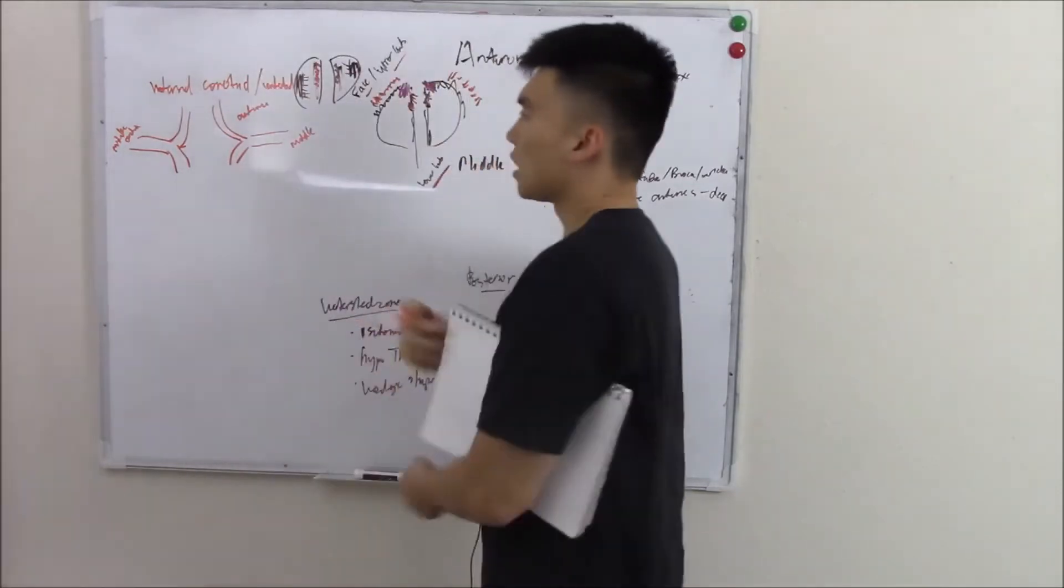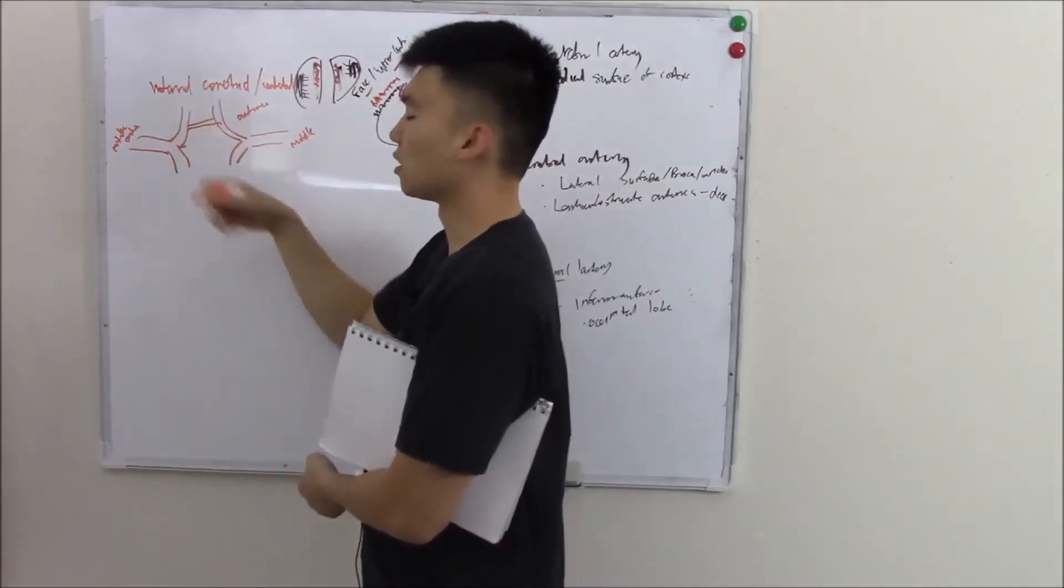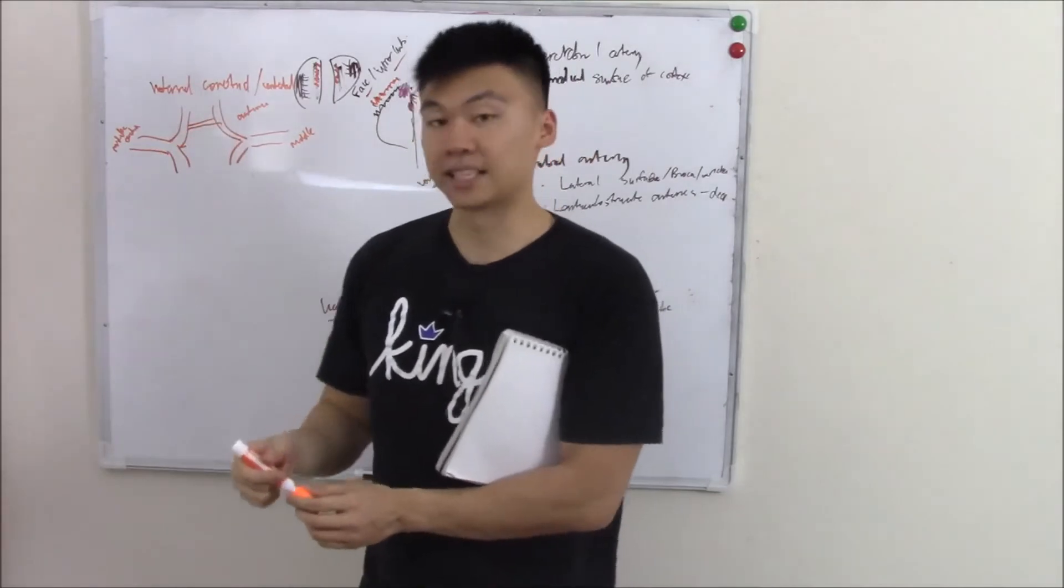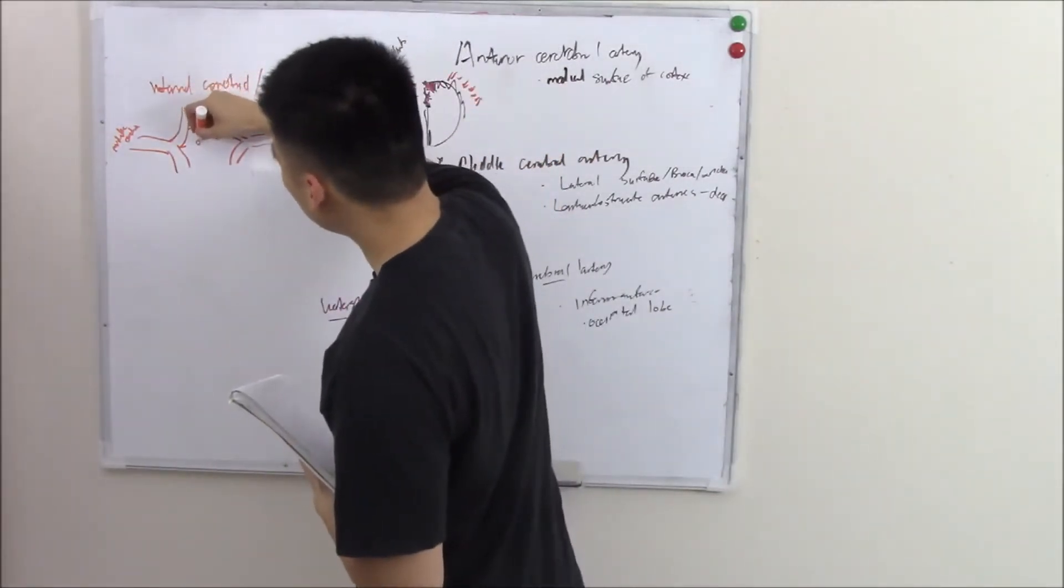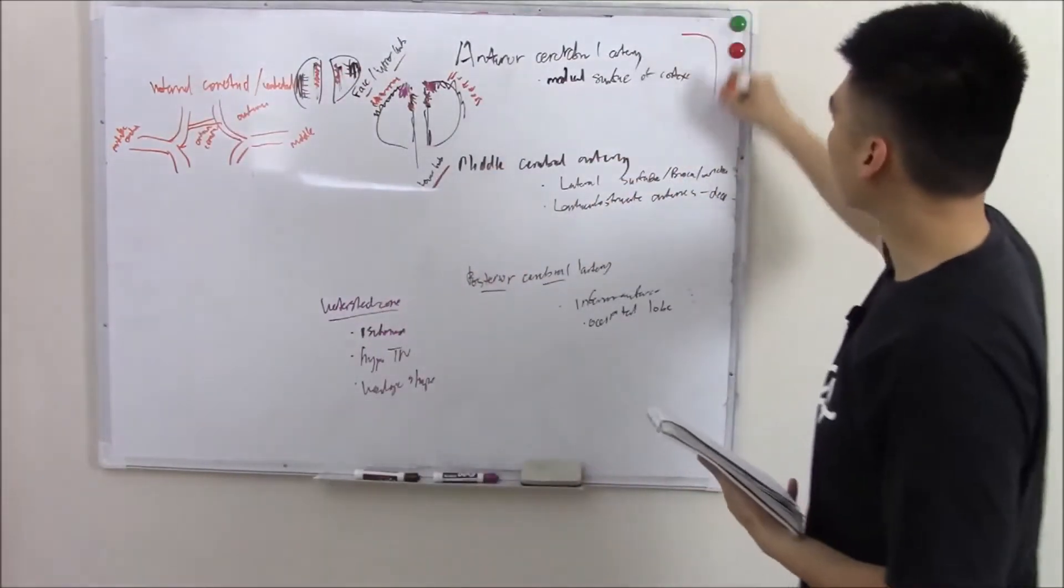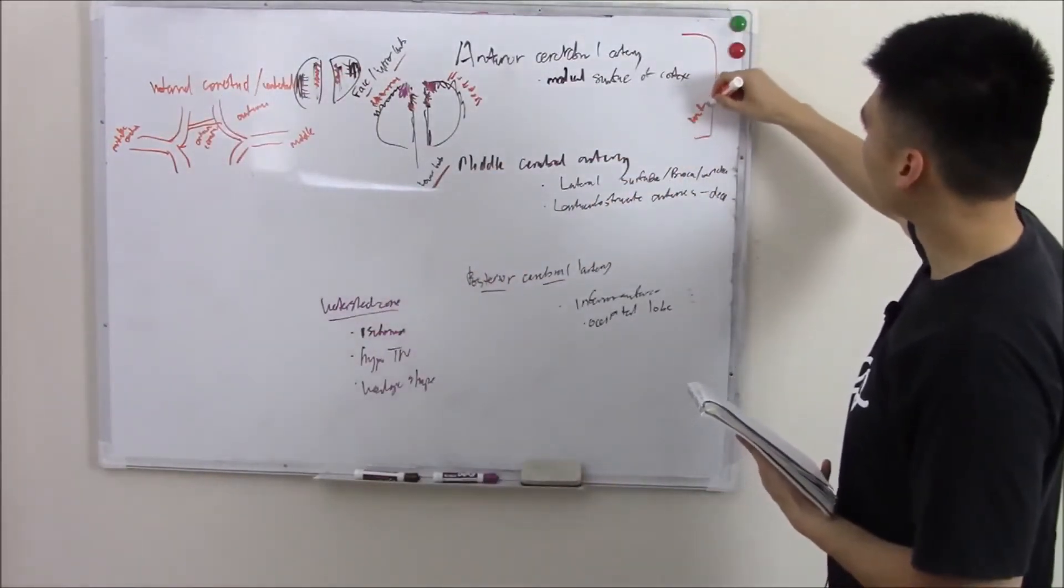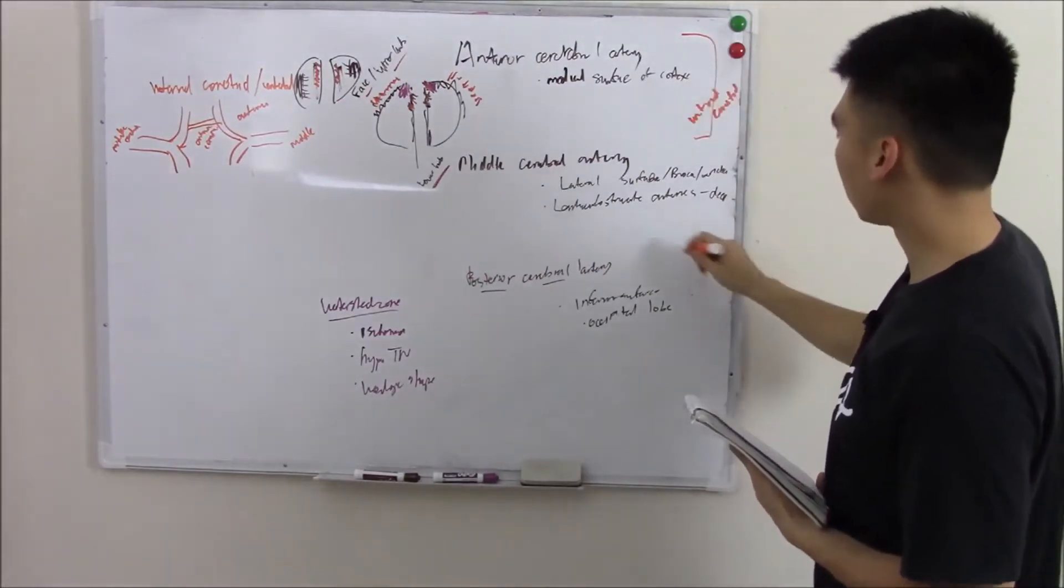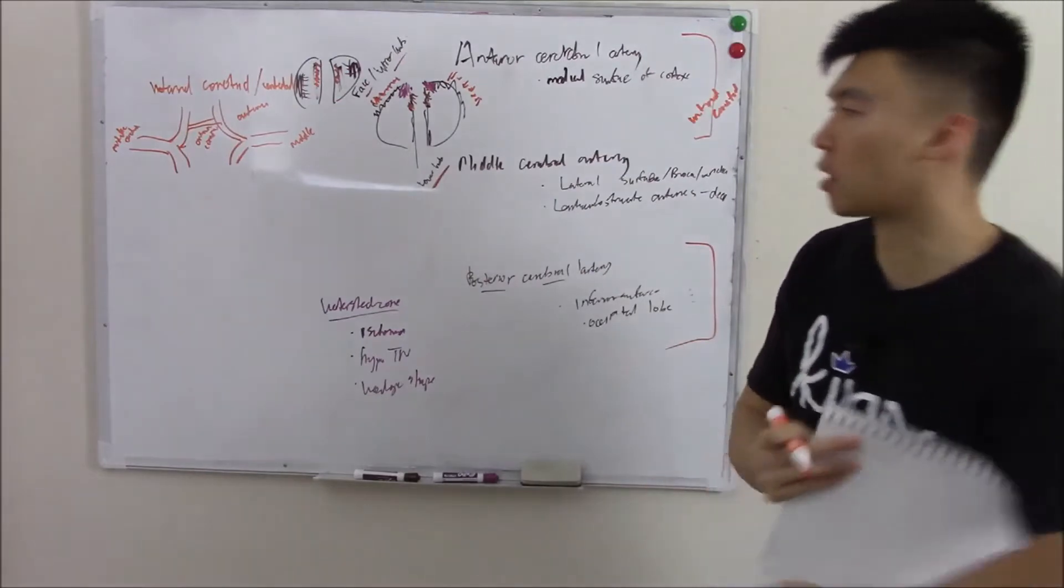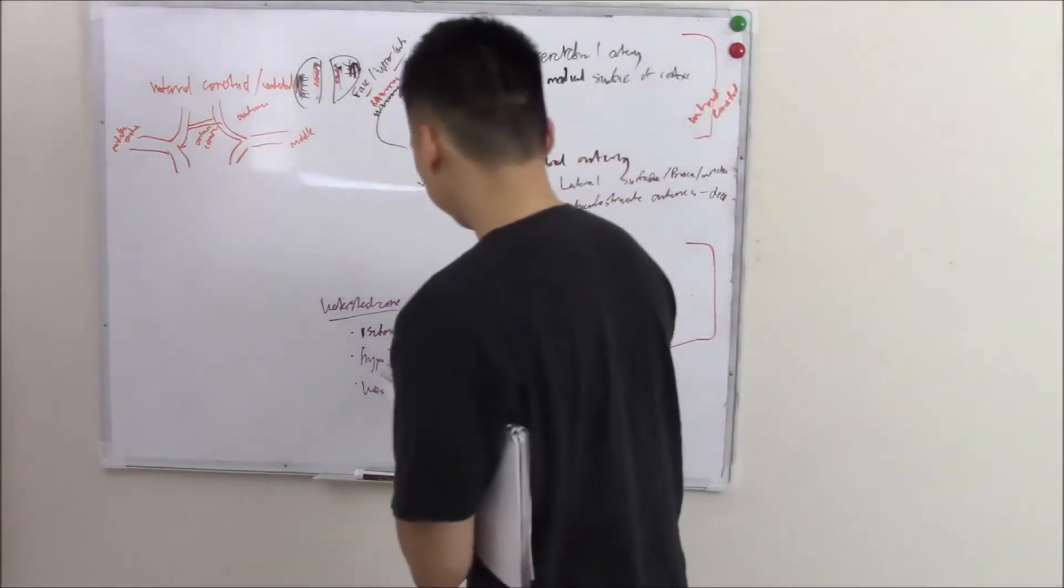There's an artery that kind of communicates between these two anterior cerebral arteries. You call this anterior communicating artery. So I'll just write anterior communicating. So anterior and middle comes from your internal carotids. How about this guy? How about your posterior cerebral artery? That'd be from your vertebral artery.